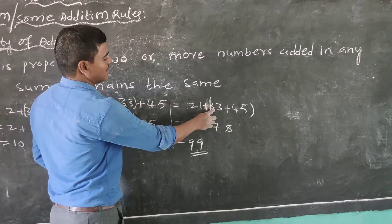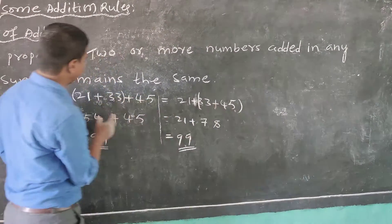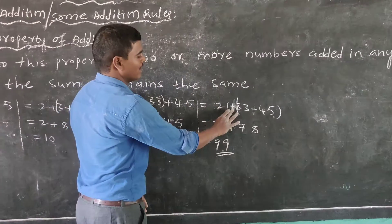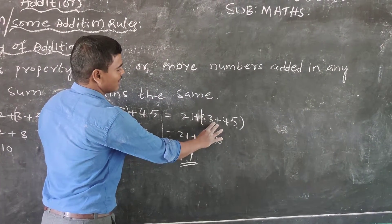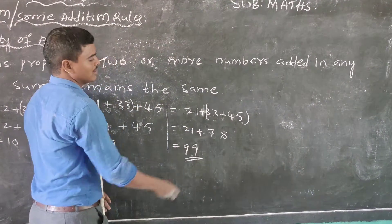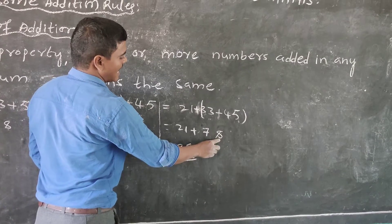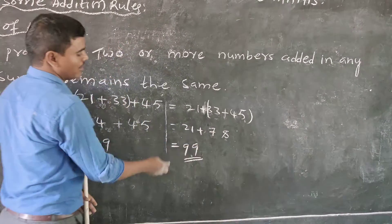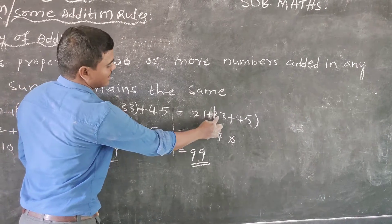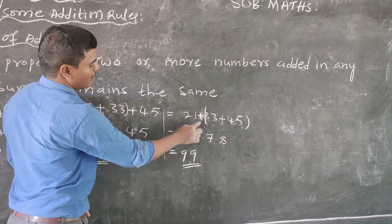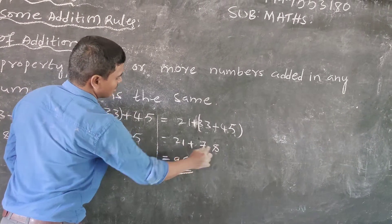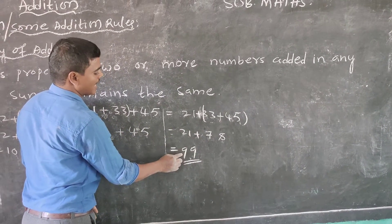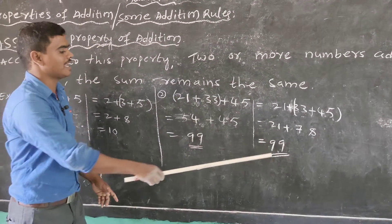Now change the grouping: 21 plus (33 plus 45). Do the bracket first: 5 plus 3 is 8, 4 plus 3 is 7, so 33 plus 45 equals 78. Then 21 plus 78: 1 plus 8 is 9, 2 plus 7 is 9, so the answer is 99. Both groupings give the same sum of 99, confirming the associative property.